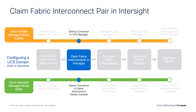The next step is claiming the UCS domain into Intersight. For UMM domains, claiming into Intersight is optional, however it is recommended in order to aggregate management across multiple UMM domains and take advantage of other connected features Intersight provides. For IMM domains, Intersight is mandatory because you do not have UCS Manager with IMM, so Intersight is required in order to create policies and configure the server infrastructure.